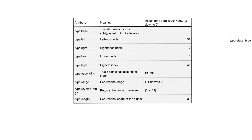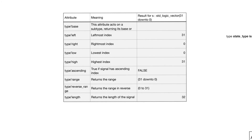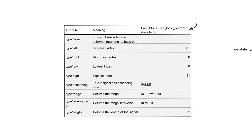To understand attributes more deeply, we need to look at specific examples. We'll look at a selection of predefined attributes in VHDL. This table shows attributes that can be applied to data types, using the example of standard logic vector 31 down to 0 — a bus of 32 bits. The syntax is: state the name of the object, then an apostrophe, then the attribute itself.